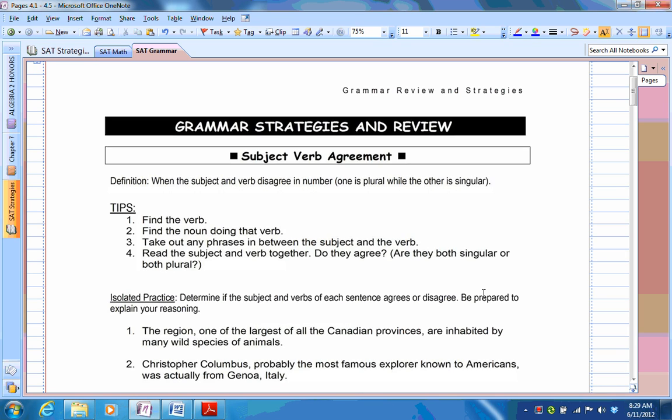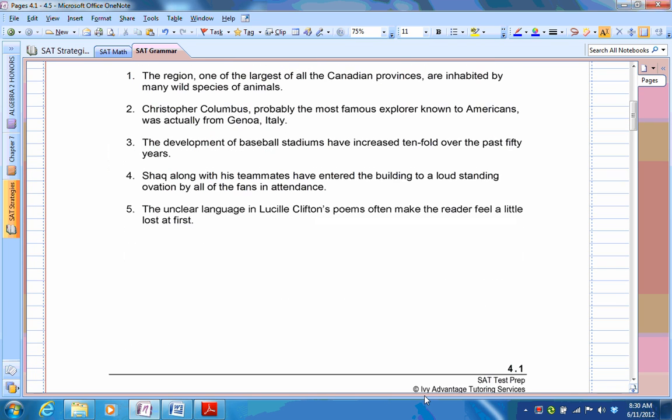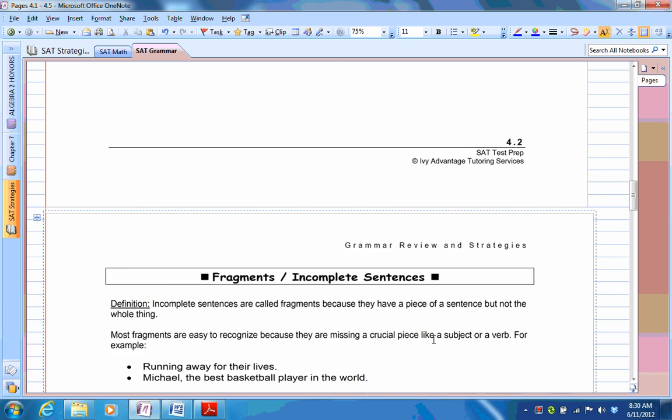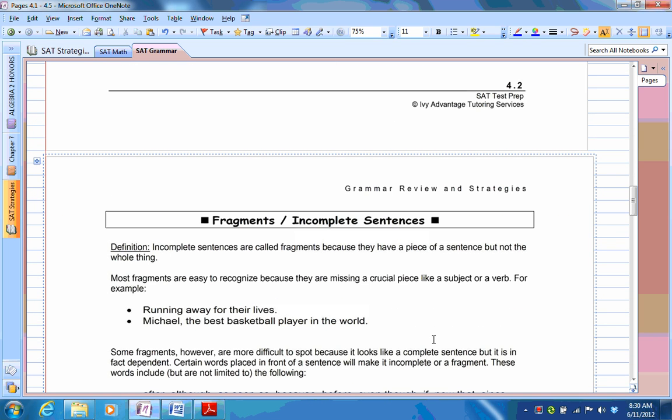Hey there, welcome to another video. This time we're going to be talking about grammar strategies and review. We're going to talk about two types of grammar rules that are common on the SAT writing section. That would be subject-verb agreement and the next one will be on fragments or incomplete sentences.